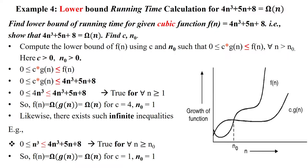Welcome to lower bound running time calculation for a given cubic function. Here, 4n³ + 5n + 8 = Ω(n). We need to show that 4n³ + 5n + 8 = Ω(n), and from this find the constant c and initial input size n₀.